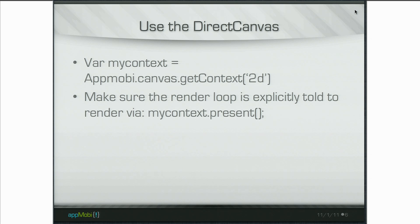Using direct canvas is very, very simple. Instead of doing a getContext against the normal canvas element, you do a getContext against the appmobi canvas element. After that, it's syntactically the same. One last thing if you're going to do this — this is all doable, you can go to our documentation page at appmobi.com/documentation and play with this stuff. In your render loop, you would do myContext.present. That forces the actual rendering.